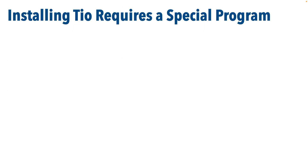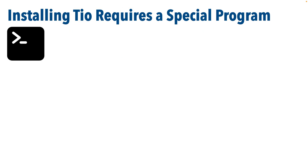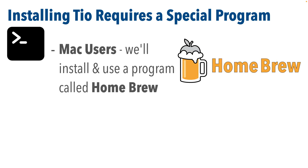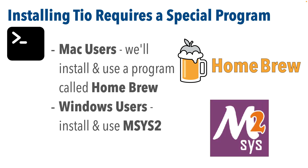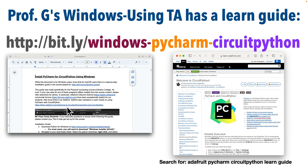We're going to use the terminal program to install TIO, but in order to install TIO we first have to install yet another program. Since I'm using a Mac, I'll install a program called Homebrew — sometimes called brew — and that will let us install TIO. Windows users need an installer called MSYS2. I'll provide some Windows installation information, but one of my teaching assistants regularly edits a Windows installation document you can find at a provided URL. You can also search for the Adafruit Learn Guide for PyCharm and CircuitPython — both will be a big help if you're a Windows user.